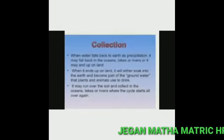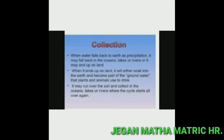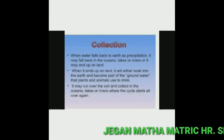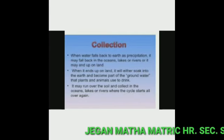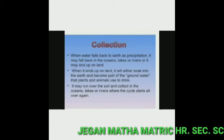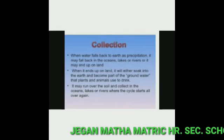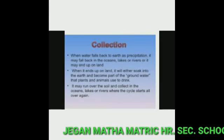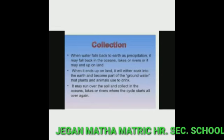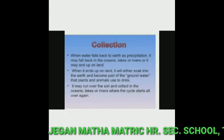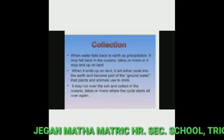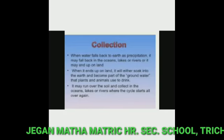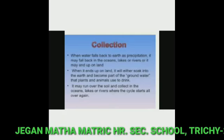In fourth stage, flowing back to ocean. When water falls back to the earth as precipitation, it may fall back in the oceans, lakes or rivers or it may end up on land. When it ends up on land, it will either soak into the earth and become part of the groundwater that plants and animals use to drink.